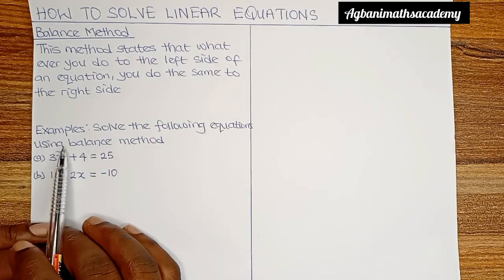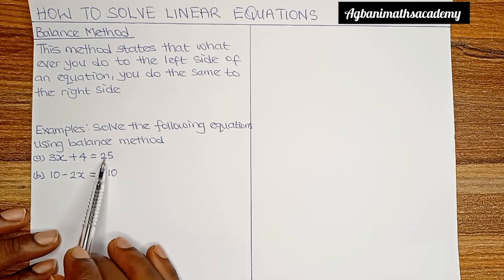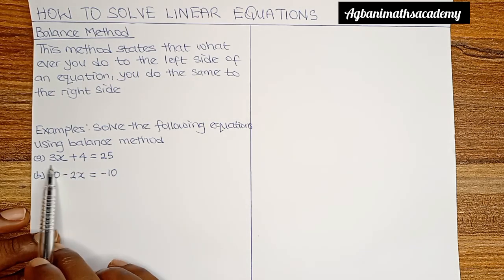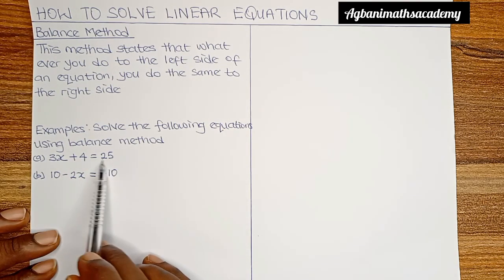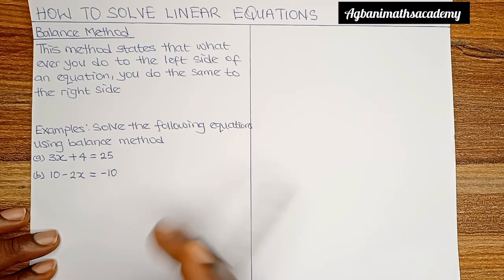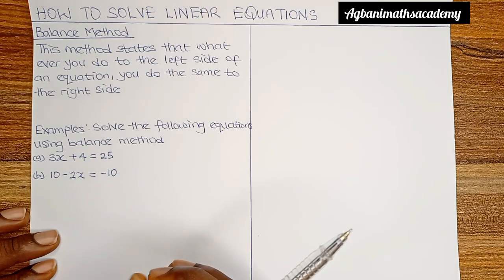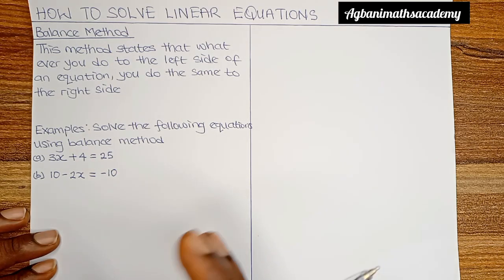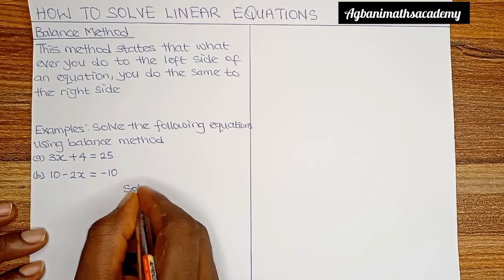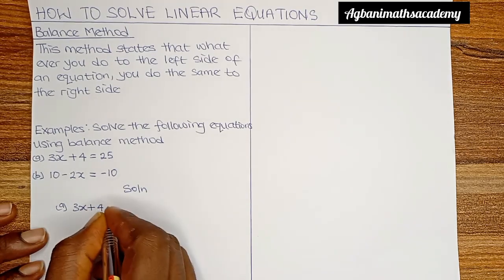We are told to solve the following equations using the balance method. Let's look at the first equation: 3x plus 4 is equal to 25. Let's confirm this is an equation. 3x plus 4 is the left side, 25 is the right side, and between them there is an equal sign. This qualifies as an equation, and it has an alphabet x. The solution is finding the value of x that makes the left side equal to the right side. Solution A: 3x plus 4 is equal to 25.